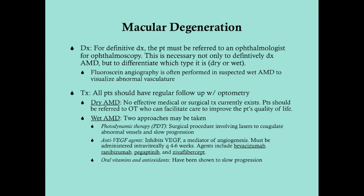Another anti-VEGF agent is pegaptanib, which is a peptide aptamer, and aflibercept, which is an IgG fusion protein. They are all effective, administered intravitreally, and inhibit continued angiogenesis to at least slow it. In addition, oral vitamins and antioxidants should be given to all AMD patients — not just wet AMD — as they have been shown to slow progression.